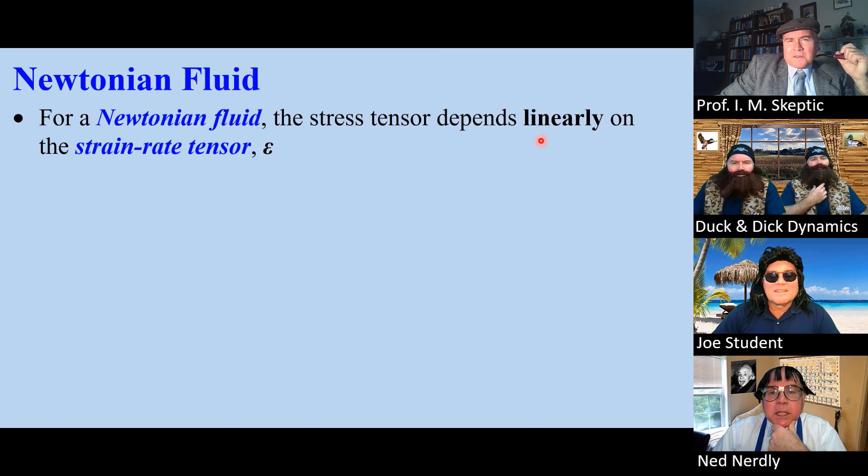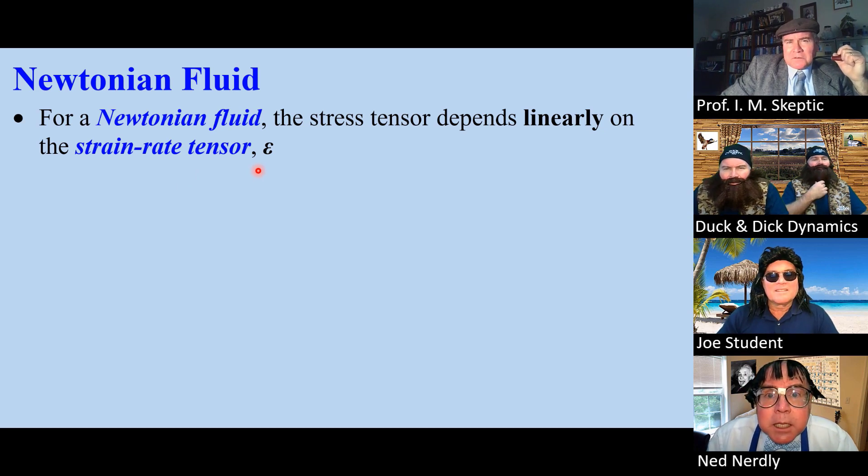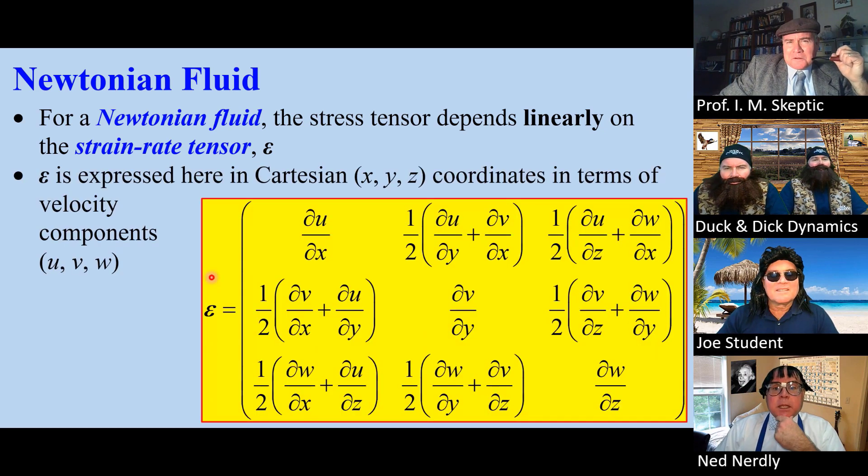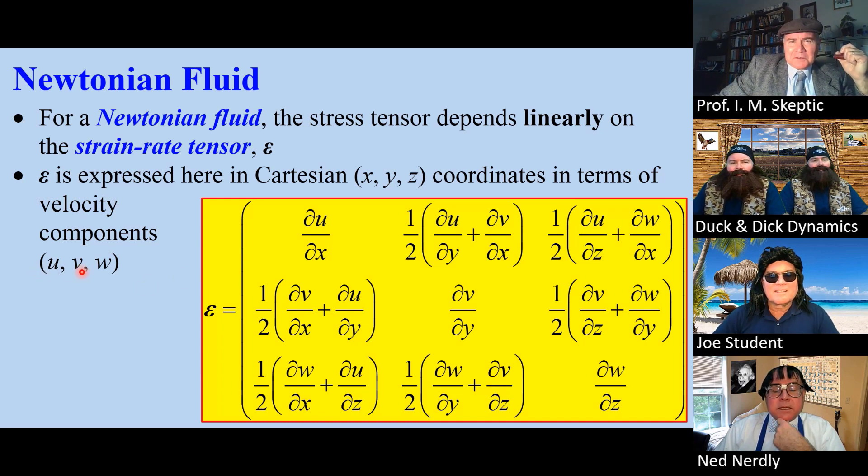For a Newtonian fluid, the stress tensor depends linearly on the strain rate tensor, which we call epsilon. Again, it's bold because it's a tensor. This is how we write epsilon in our Cartesian coordinate system, in terms of derivatives of velocity components, u, v and w.